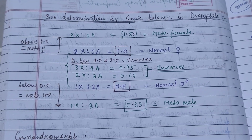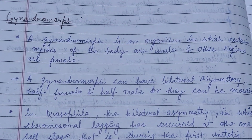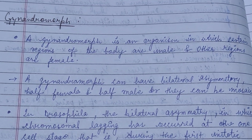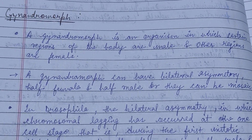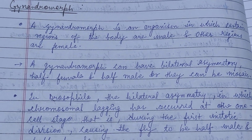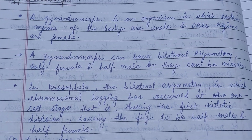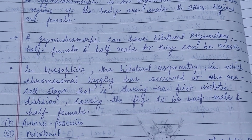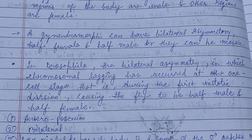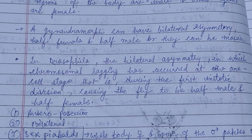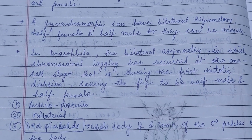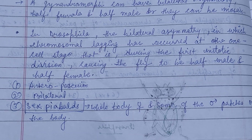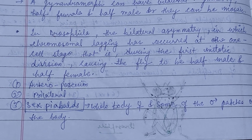Here is a term — gynandromorph — which is an organism in which certain regions of the body are male and other regions are female. Gynandromorphs can have bilateral asymmetry, being half-female and half-male, or they can be mosaic.